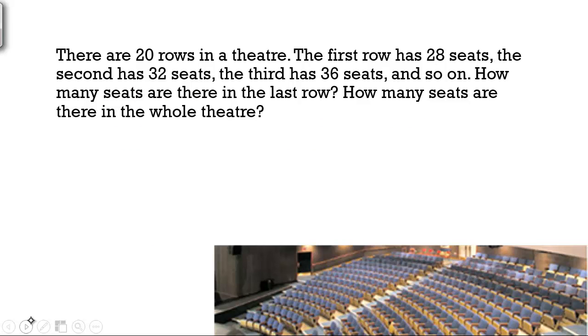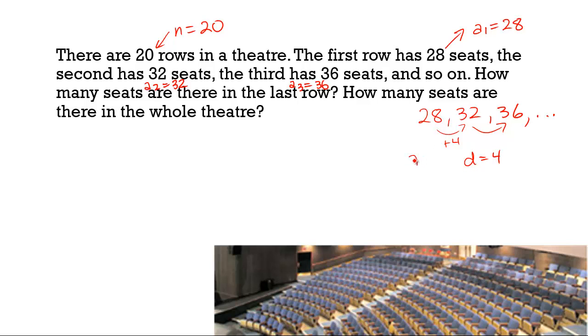Now, let's take a look at an application. There are 20 rows in a theater. The first row has 28 seats. That's essentially telling us that a₁ is 28. And the n number of terms is 20. The second row, a₂, has 32 seats. The third, a₃, has 36 seats, and so on. How many seats are there in the last row? How many seats are there in the whole theater? Well, we can see that our first term is 28. Then we have 32. Then we have 36. And as rows get added, you can see that this is an arithmetic sequence. And we're adding 4 each time. Our common difference is 4, and our initial term is 28.